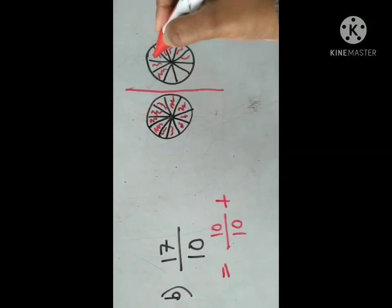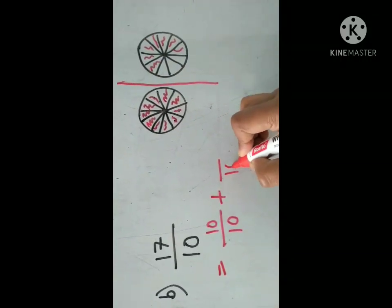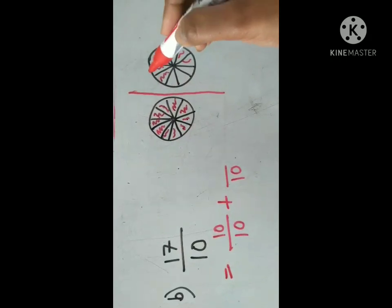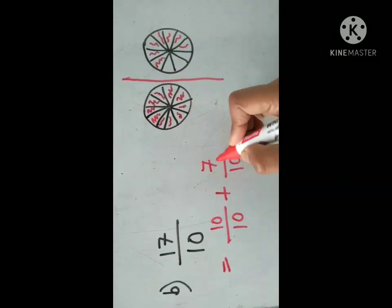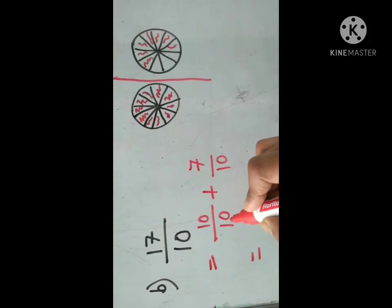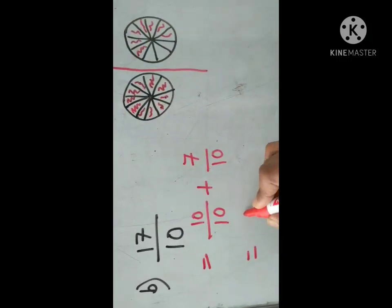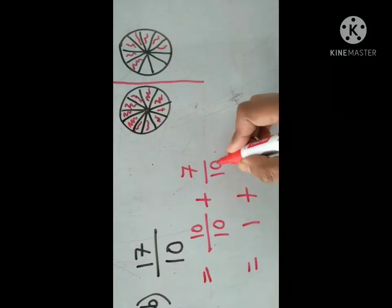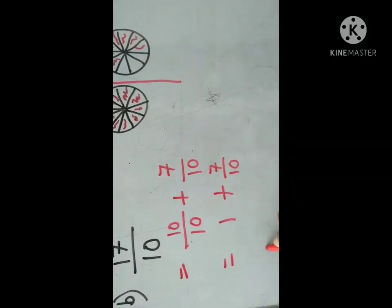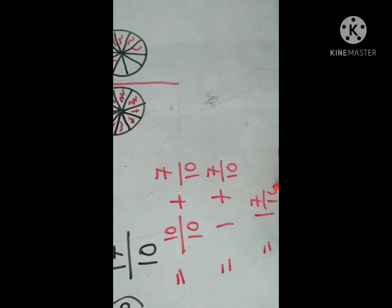Plus now this one — what is the denominator? 10. Out of 10, how many parts are shaded? 1, 2, 3, 4, 5, 6, 7 — seven parts are shaded. 10 over 10 means one whole figure, so write here 1. Plus 7 over 10. This can be written as one whole and 7 over 10.